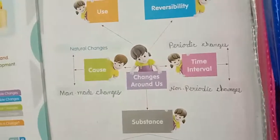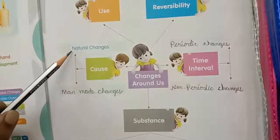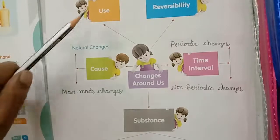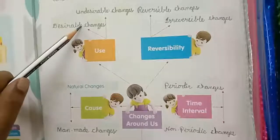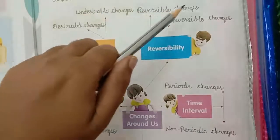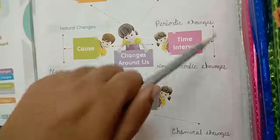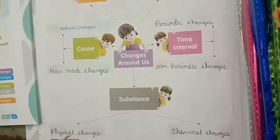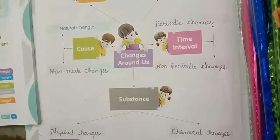Okay children, changes around us — cause: natural changes and man-made changes; uses: desirable changes and undesirable changes; reversibility: reversible changes and irreversible changes; time interval: periodic changes and non-periodic changes; substance: physical changes and chemical changes. Okay children, write this flowchart neatly. Thank you children, I will meet you in the next class.